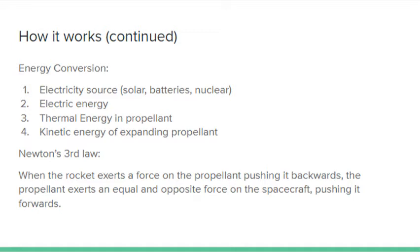When the rocket exerts a force on the propellant, it pushes it backwards out of the nozzle. Because of Newton's third law, the propellant exerts an equal and opposite force on the spacecraft, propelling it forwards.